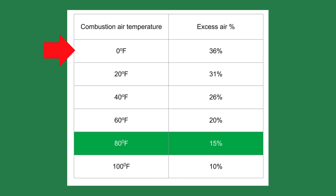As the cold weather moves in and the temperature drops to zero degrees outside, the excess air rises from 15 to 36 percent — 140 percent higher. This reduces the boiler efficiency to 83.1 percent. It's less than one percent, so it's no big deal, I can hear you say.